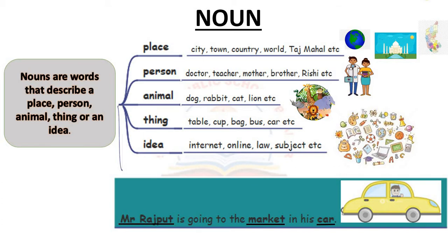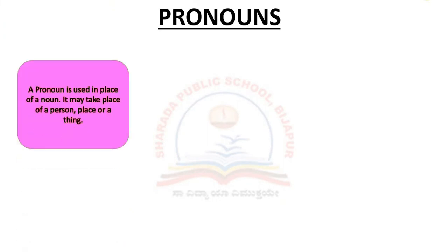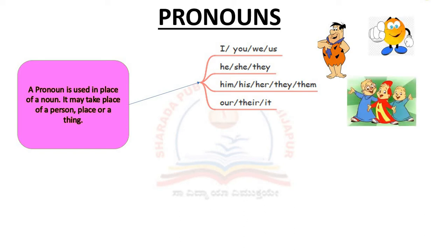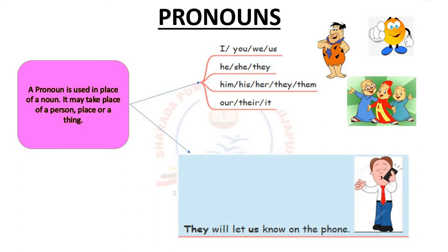Let's look at another part of speech: pronouns. A pronoun is used in place of a noun. It may take the place of a person, place, or a thing. The words known as pronouns are: I, you, we, us, he, she, they, him, his, her, them, their, it. We use pronouns instead of repeating the name of a particular person or people we are speaking about. For example: They will let us know on the phone. In this sentence, they and us are the pronouns used instead of the names of the people.